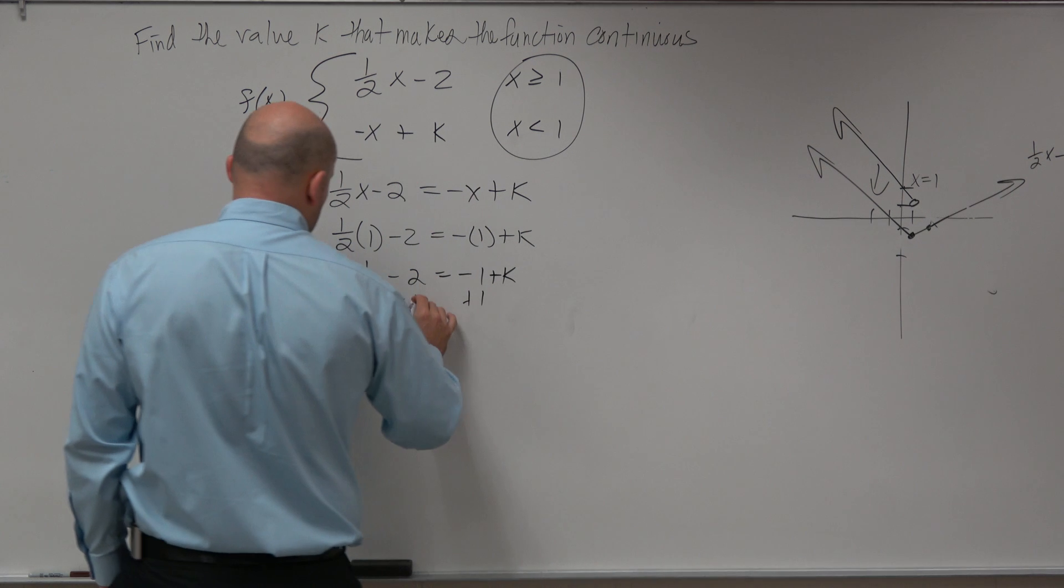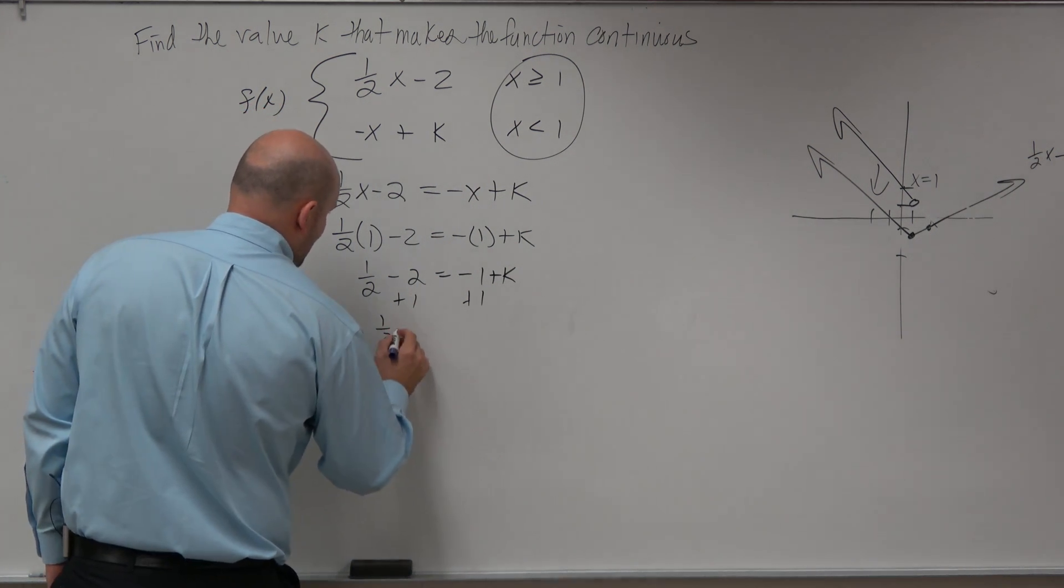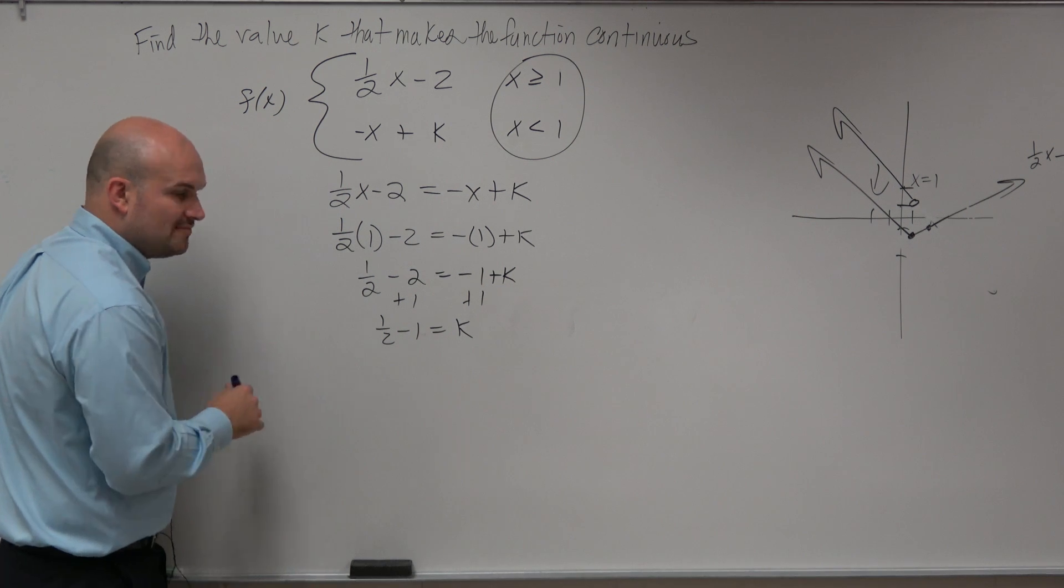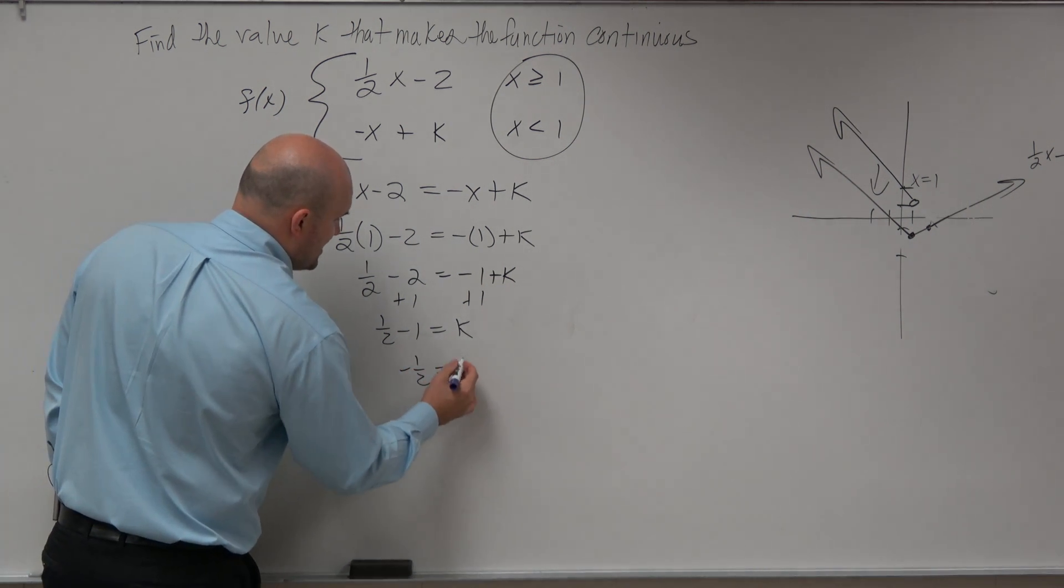So I add 1, add 1 to both sides. 1 half minus 1 equals k. Well, 1 half minus 1 is going to be negative 1 half equals k.